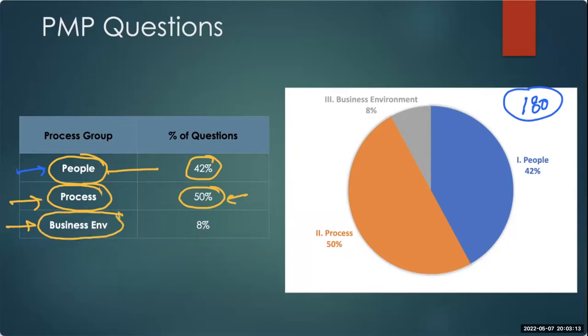How does business involvement affect you as a project manager? Those questions are going to be 8 percent of the questions. So if I say 50 percent comes from process, total questions from process would be how many? 90 questions. Good math. So 90 questions are going to be from process.